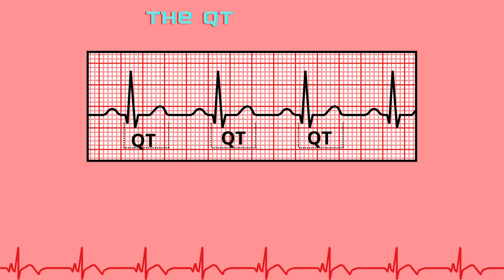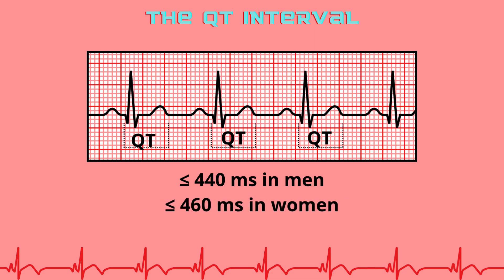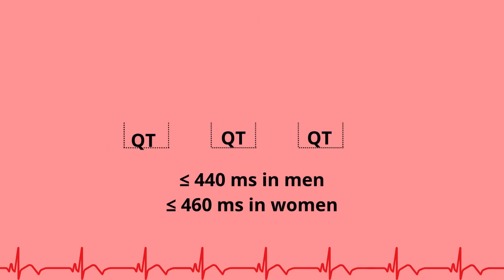The QT-interval measures from the beginning of the QRS to the end of the T-wave, covering both depolarization and repolarization. Normal corrected QT times are less than 440 ms in men and less than 460 ms in women. A prolonged QT may predispose to ventricular arrhythmias.